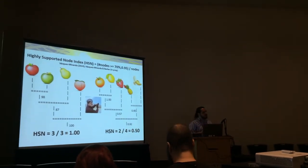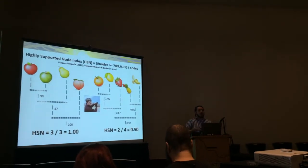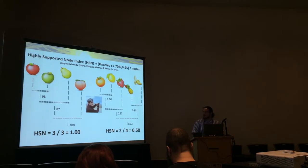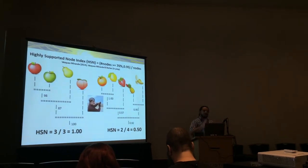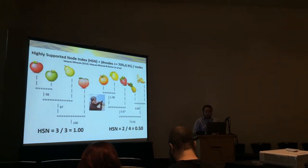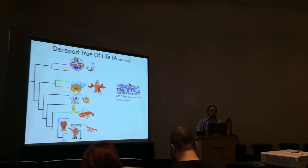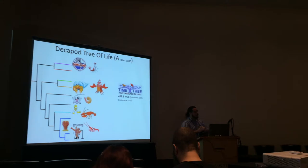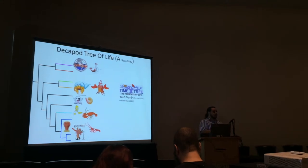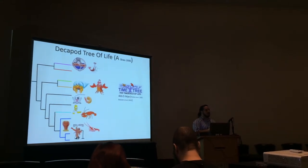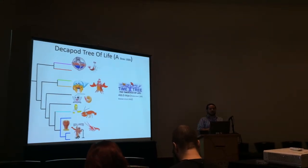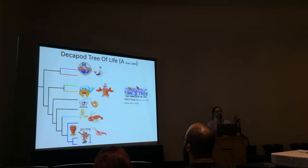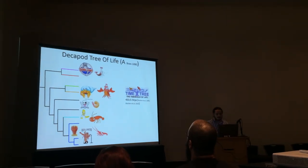What does this mean and why is it useful, especially when we have all-genomic data? I'm going to give you two examples. The first one is a decapod tree of life.